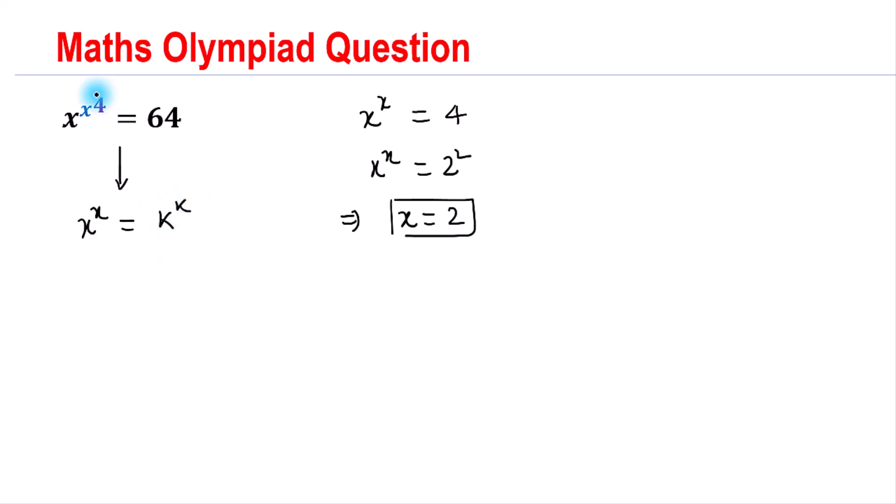Please note that the exponent on the left-hand side of the equation is x to the 4. So our target is to change the base from x to x to the 4. This can be done by raising the exponent by 4 on both sides of this equation.